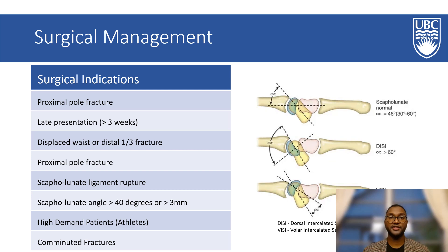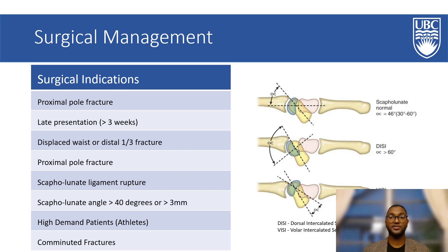Indications for surgical interventions include any proximal pole fracture as there is a high risk of compromised vasculature in this region, displaced fractures, a late presentation of greater than three weeks since the injury occurred with no treatment, and any displaced fracture in the waist or distal as well as proximal pole fracture due to the retrograde blood flow that could lead to avascular necrosis. A scapholunate angle greater than 40 degrees or greater than three millimeters of displacement also indicates a surgical intervention. This is known as the humpback deformity.